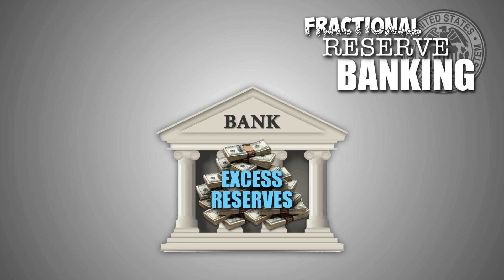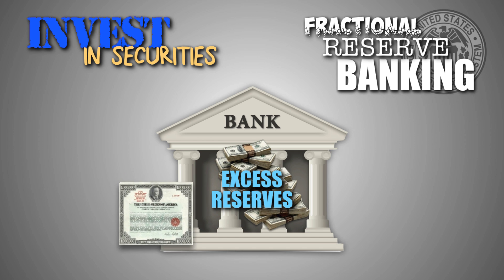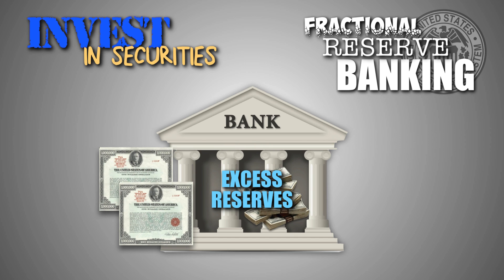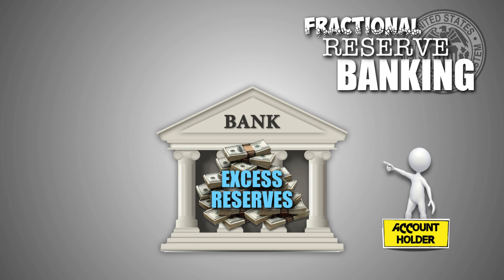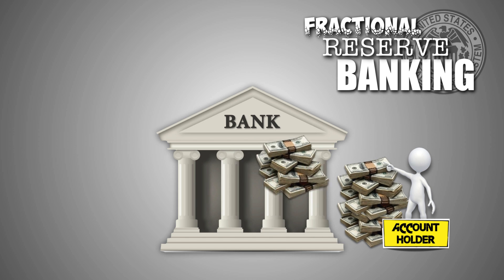Banks can also use excess reserves to invest in bonds and other securities. Banks will compare the profits they could potentially earn by collecting interest from new loans and the profits they could potentially earn by investing in securities, and if the securities offer a greater chance for profits, they can use excess reserves to purchase those securities. In the end, regardless of how banks use their excess reserves, they must be able to cover any and all withdrawals when account holders ask for their demand deposits back.